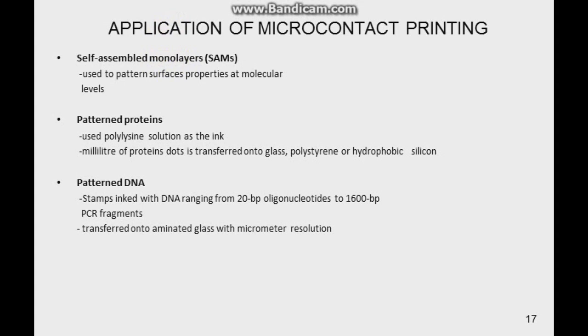Apart from the thiol or the SAMs, you can use proteins to coat your surface, to create a pattern on your surface. For example, maybe you can use polylysine solution, a protein, as the ink. What you can do is you transfer milliliter of these protein dots onto surfaces like glass, polystyrene, or a hydrophobic silicone.